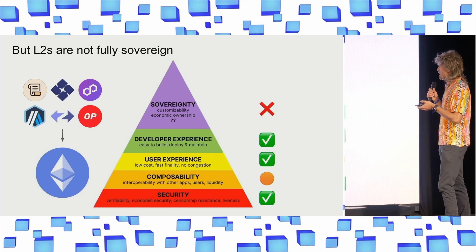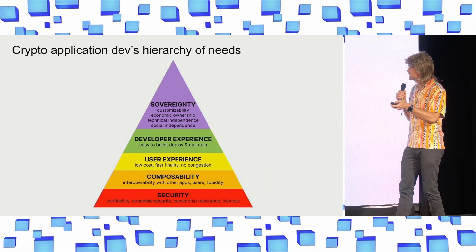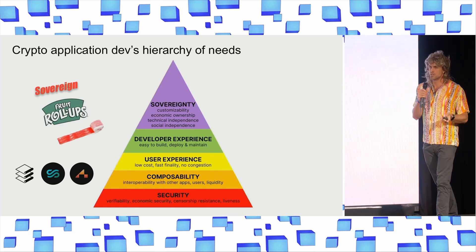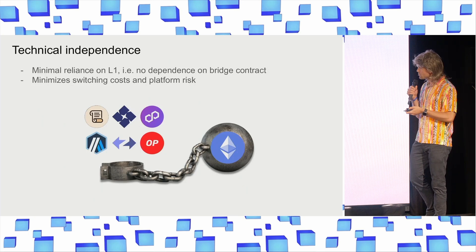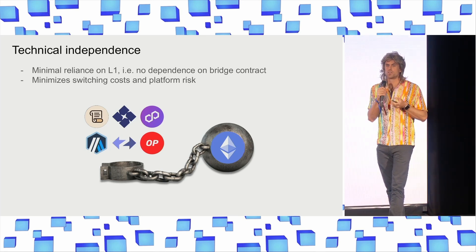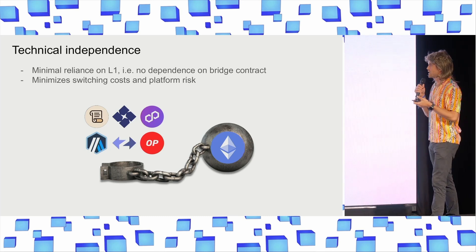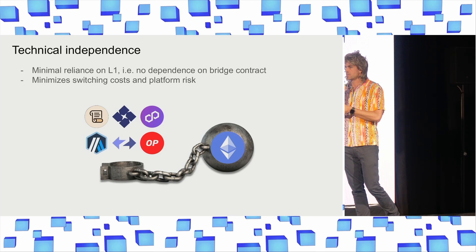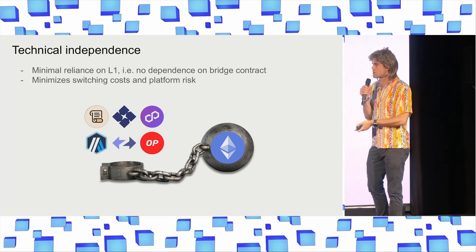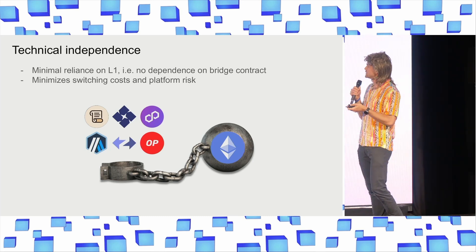But the thing is that L2s are just fundamentally not fully sovereign. There's actually more to the sovereignty story — specifically two things: technical independence and social independence. And this is where sovereign rollups, as opposed to L2s, come into play. When you build a sovereign rollup, you make very minimal assumptions about the underlying L1 — you just treat it as a dumb, simple DA layer that you post and retrieve data from. This means you have really minimal switching costs. You can just point your chain to a different layer in case the underlying L1 fails to scale properly or tries to extract more value. So you minimize your platform risk, as opposed to an L2 where your rollup logic lives in the L1 — there's a much tighter coupling.